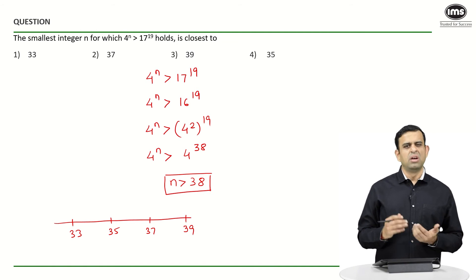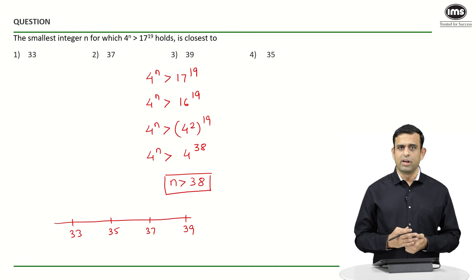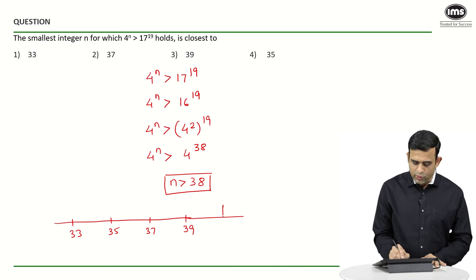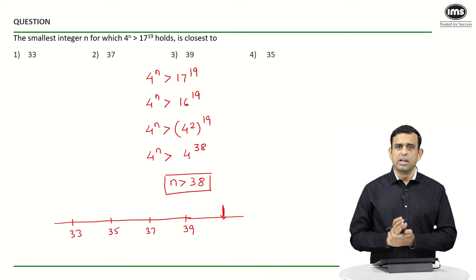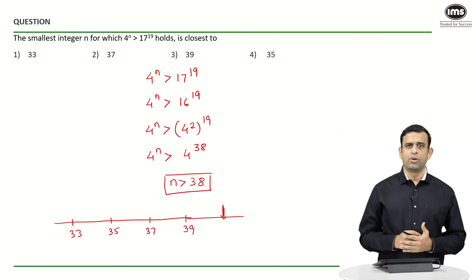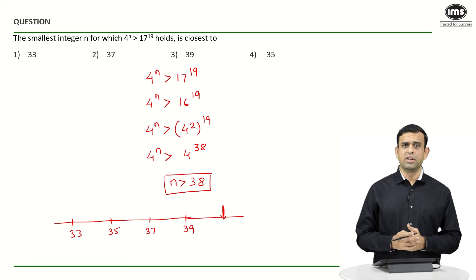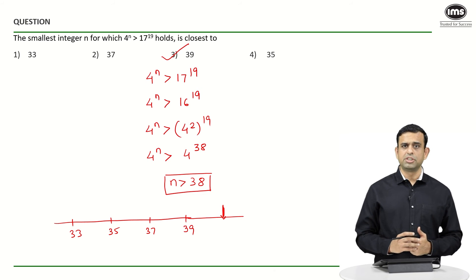Since n must be more than 38, the first integer that comes to mind is 39. It could be 40 or 41 — we don't know exactly — but whatever value it is, being greater than 38, it is definitely closest to 39 rather than 37, 35, or 33. So the answer is option number 3, which is 39. Try the replica question and put your answer in the comment section.